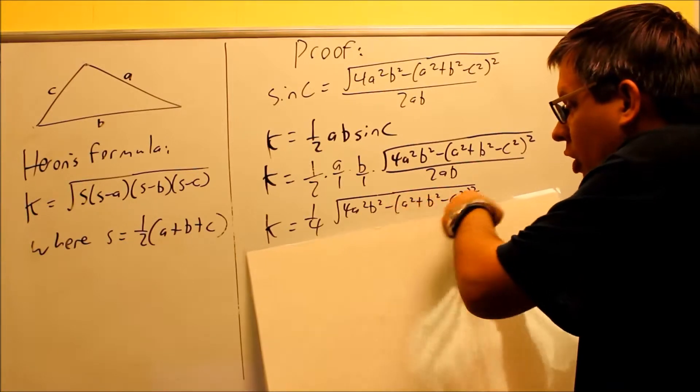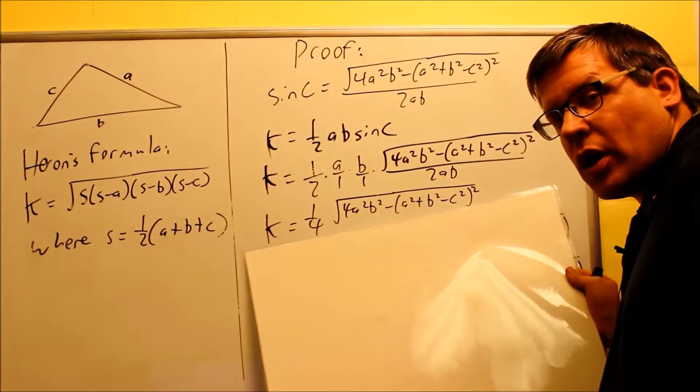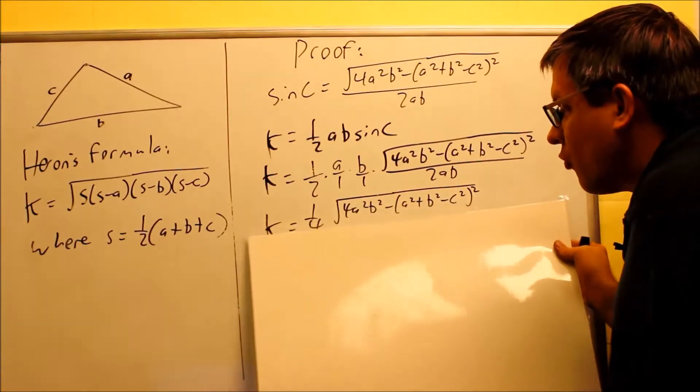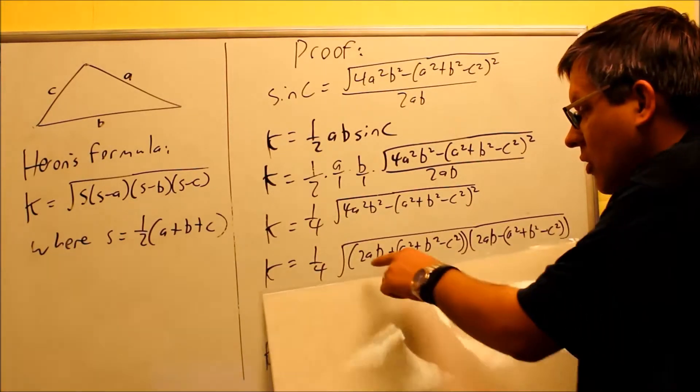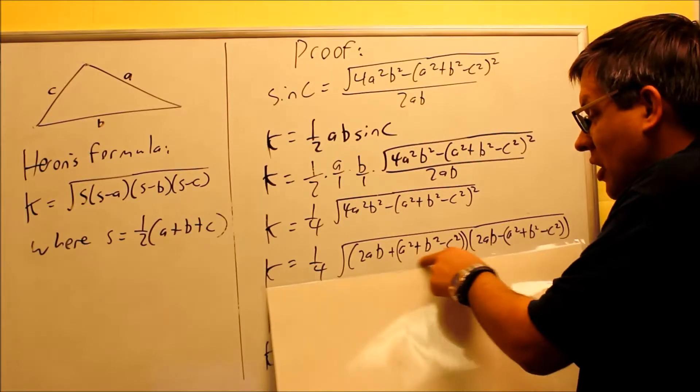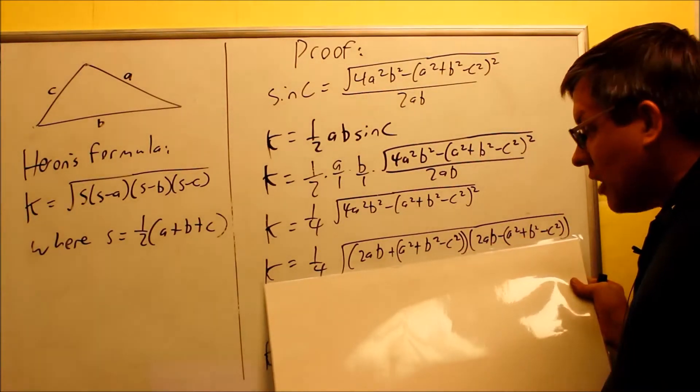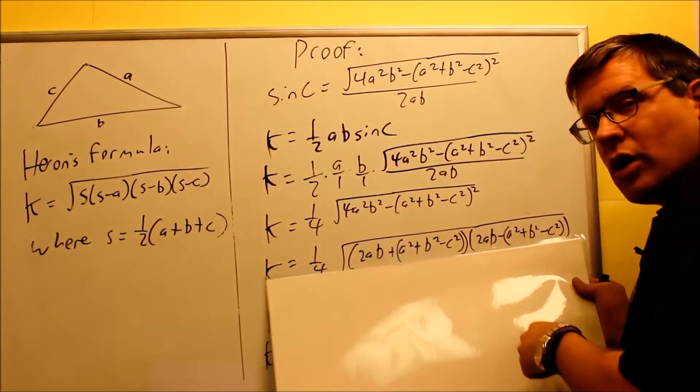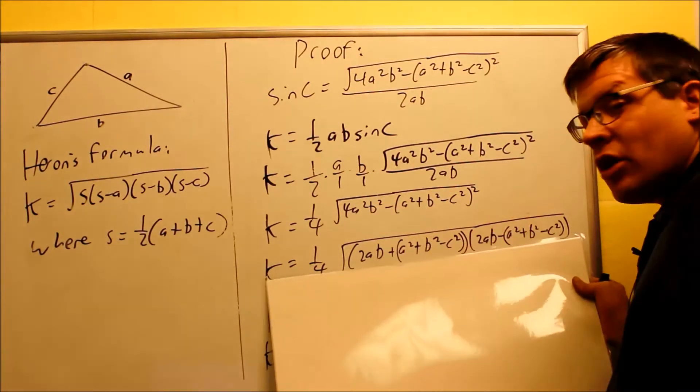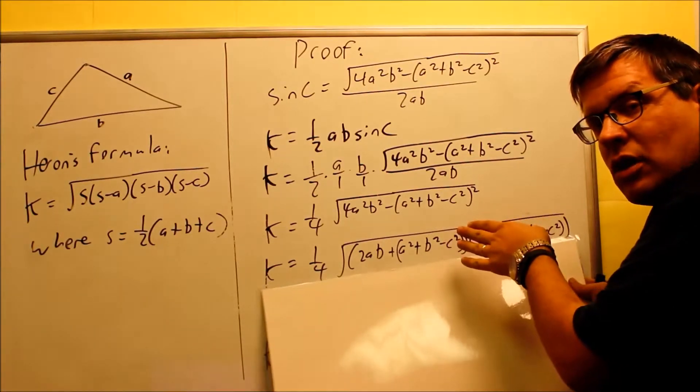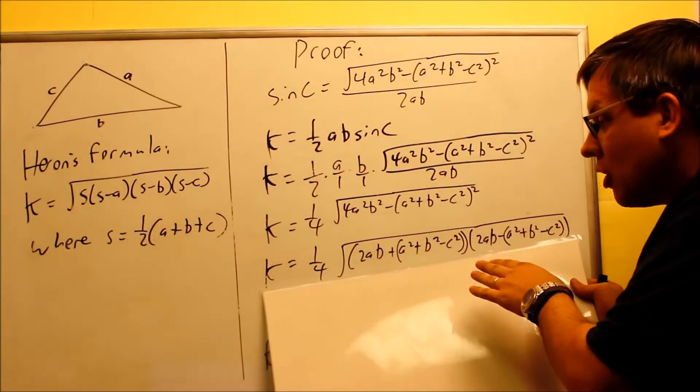It's hard to notice this, but really what we have going on here is a difference of squares. So we're going to factor this by using a difference of squares formula. So what we get, we get 2ab plus all this stuff here, and 2ab minus all this stuff inside there. So basically that's what we have. We use the difference of squares formula in order to break that down.